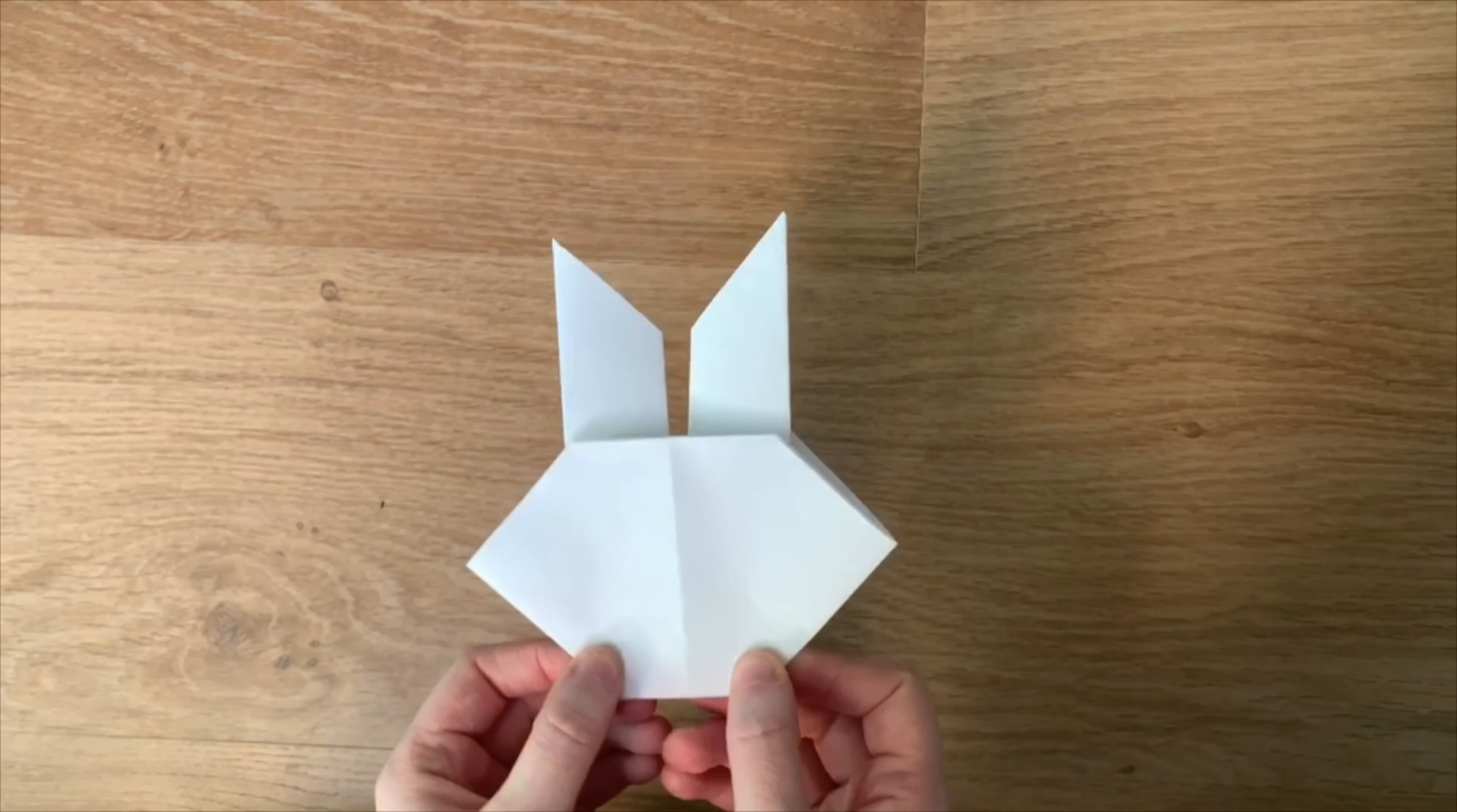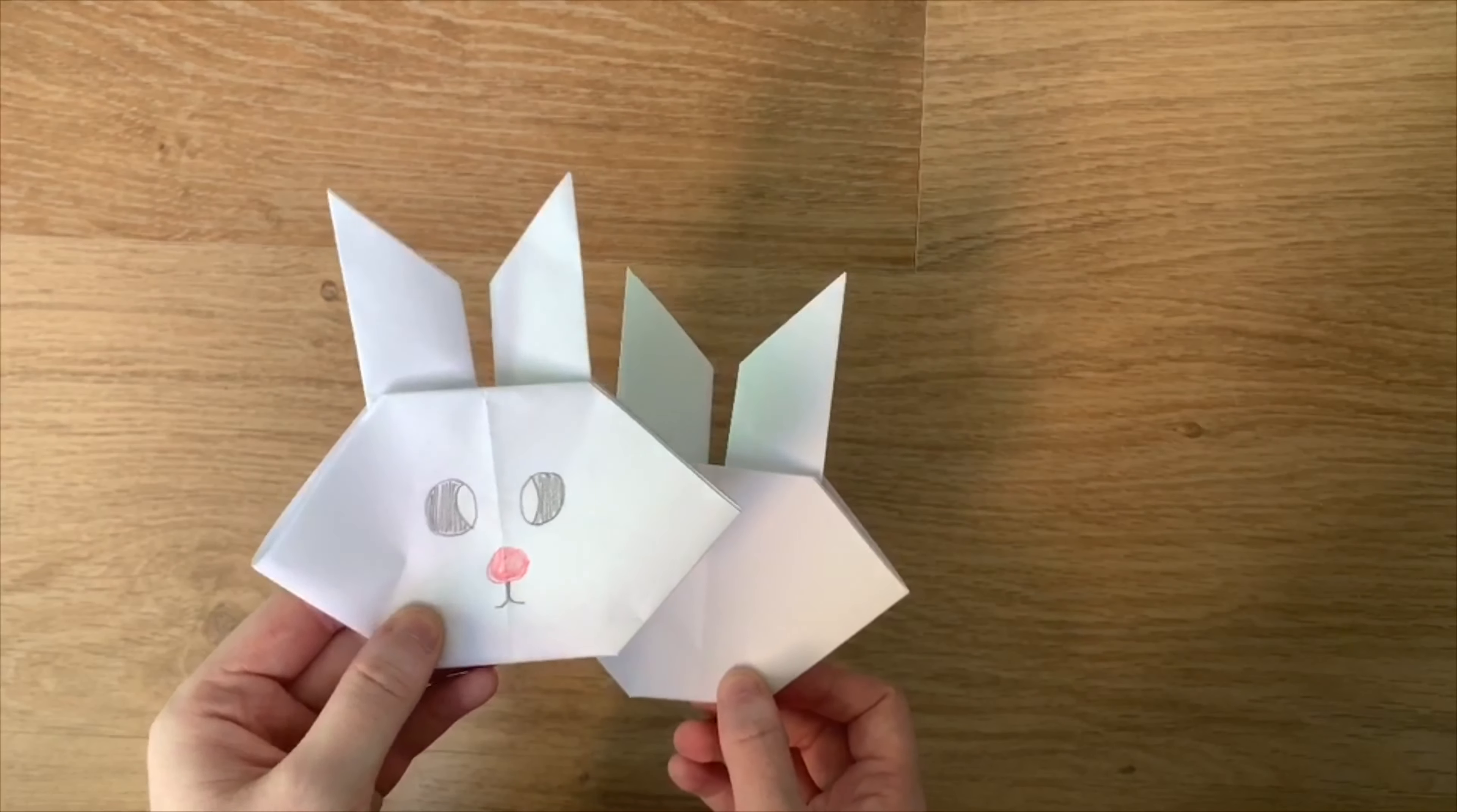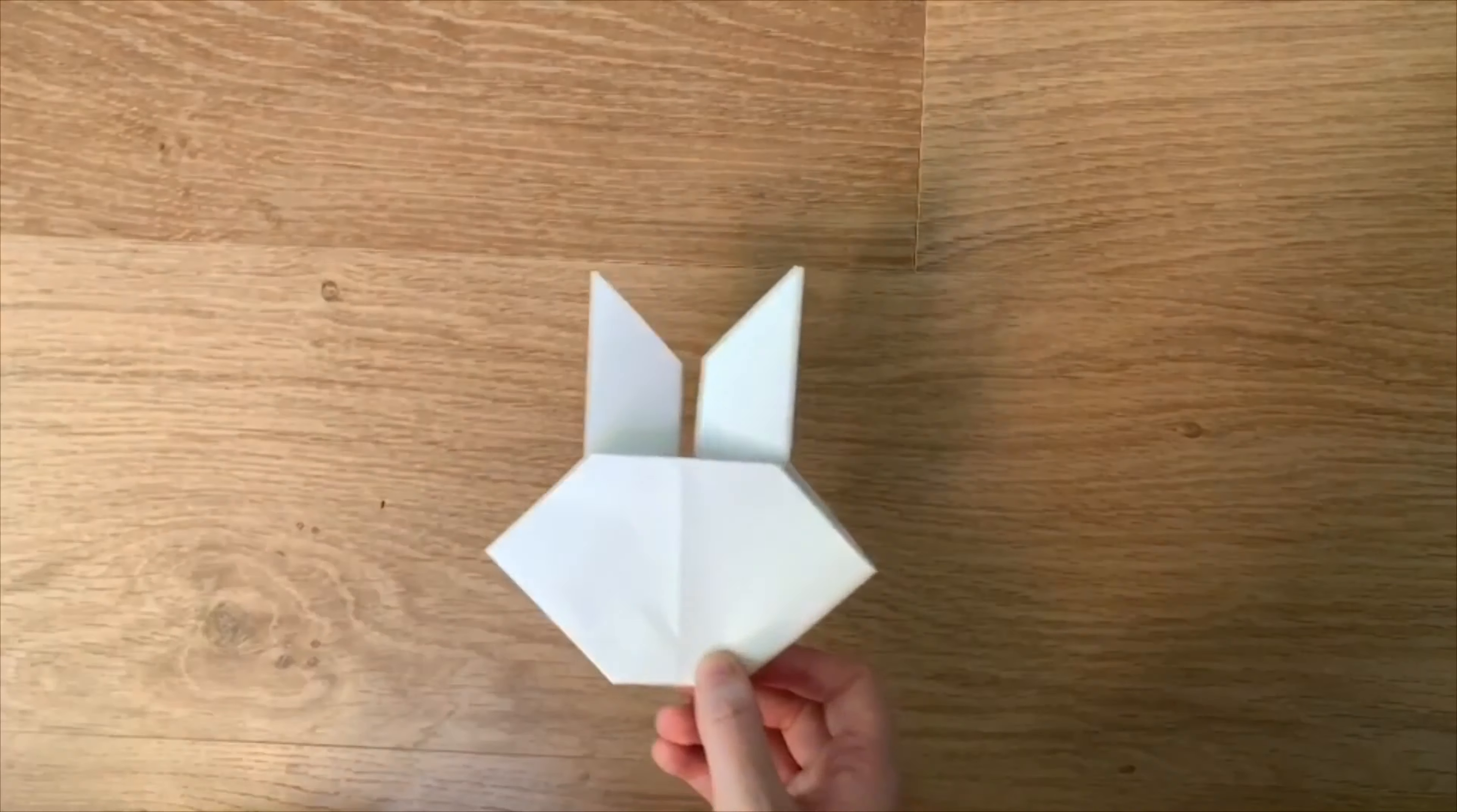Now you can color it in so it looks something like this. But I'm sure you guys will do it much better than I did. So there you go guys. That was our three simple origamis. I hope you enjoyed it. And if you did, give us a big thumbs up and subscribe to our YouTube channel so you can catch us with more videos next week. Bye.